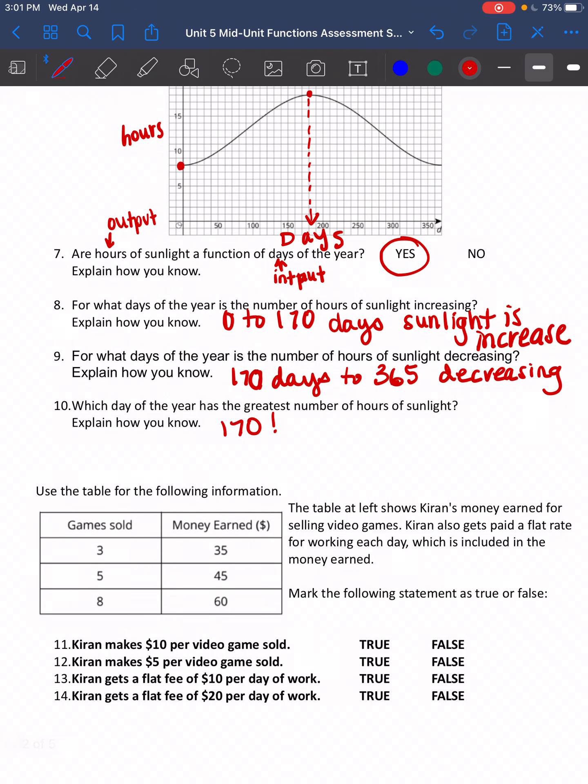Use a table for the following information. The table at the left shows Kiran's money earned for selling video games. Kiran also gets paid a flat rate for working each day, which is included in the money earned. Mark the following statement as true or false. So let's dissect this table a little bit before we even answer any of the questions. I know that when I'm adding two games, I'm earning $10. Because to go from 3 to 5, adding two games, I go from 35 to 45, so I'm adding $10.